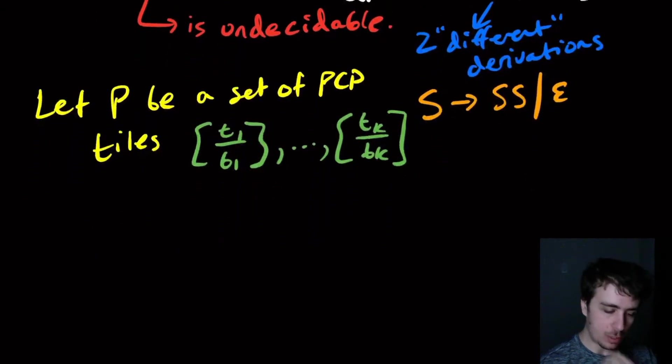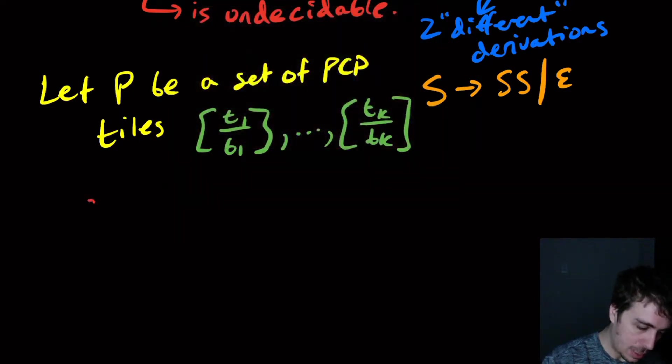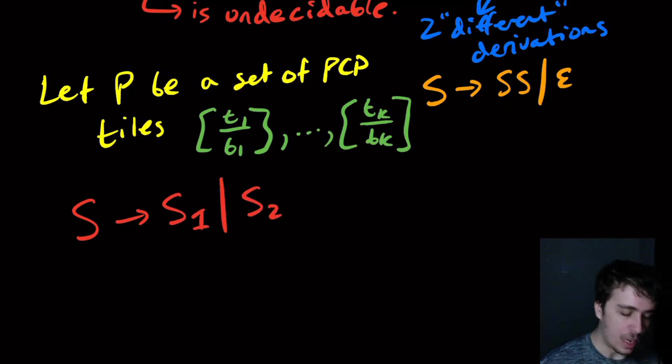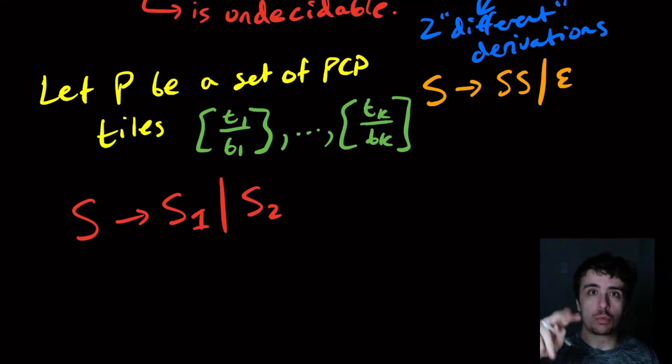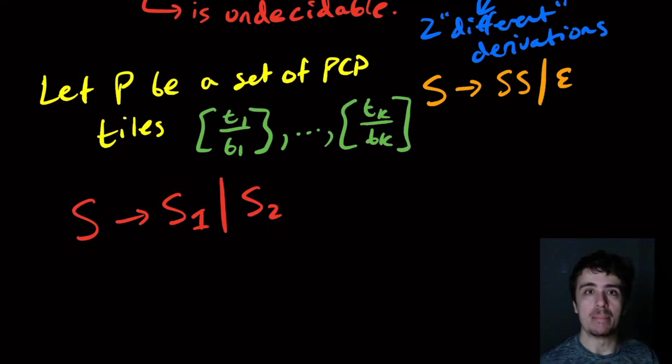Now we need to make a grammar that will be ambiguous exactly when this has a solution—namely, I can pick some tiles such that the top string read one direction equals the bottom string read from the same direction. Here's what the grammar is going to be: we'll have a starting variable S that makes two variables S1 or S2. S1 will be responsible for making the top row and S2 for making the bottom row.